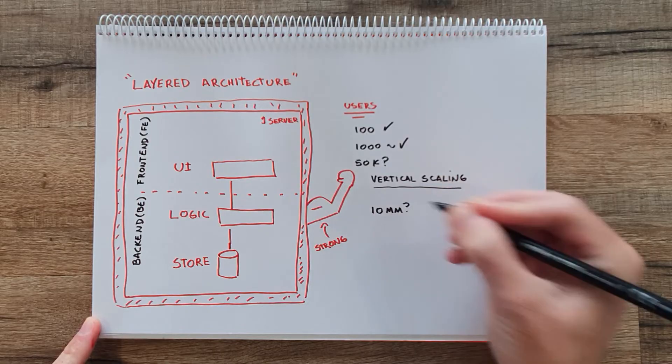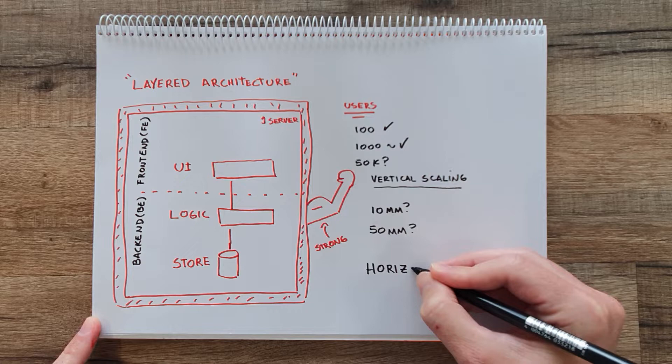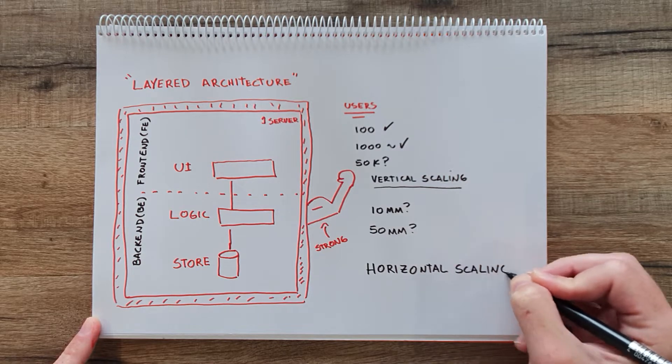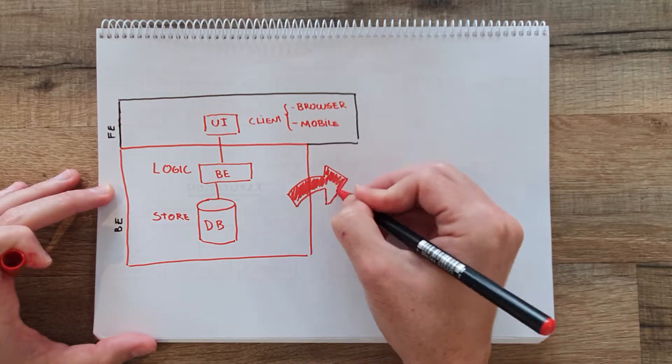Now let's say we want to handle 10 million users at the same time. In that case, having just one server probably won't be enough. So we need to do horizontal scaling, or scaling out. Horizontal scaling basically means splitting the load between different servers. It gives you scalability but also reliability, because you will have more redundancy, and it's usually the preferred way to scale.